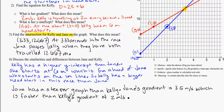And then putting this into context again, we could say something like, this shows Jane is traveling at a faster speed than Kelly.